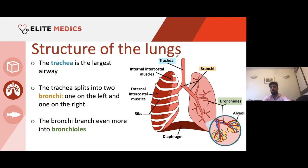The trachea is the largest airway — the principal airway in which air moves into once it's entered the nose and mouth. Following the respiratory tree, inhaled air comes in through the nose and mouth, goes down the trachea, and at this point it splits into two — the two bronchi: the right bronchus and the left bronchus. Remember, the diagram is flipped for us because we're looking at a person as if facing them.